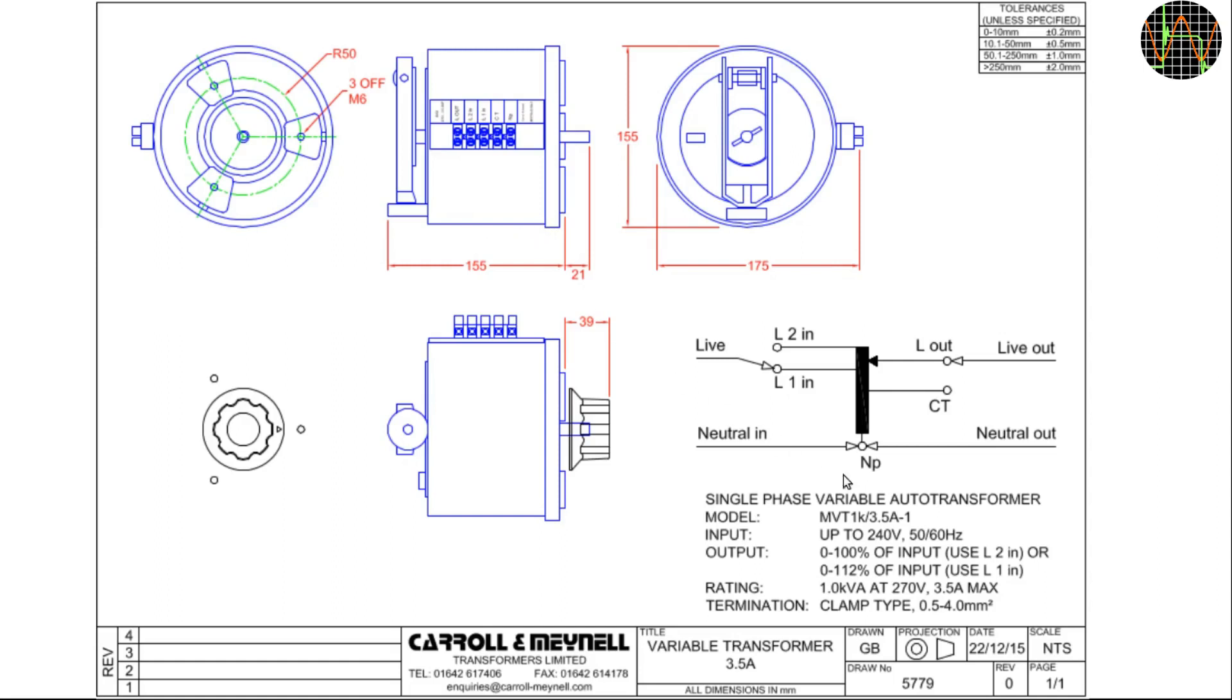The other important bit on this drawing is the wiring diagram here. This transformer has a choice of two input connections for the live wire. If you connect it to L2, which is the very end of the coil, then the output can go as high as the input voltage, which is when the slider basically touches L2. So at an input of 240V, you get 0 to 240V as an output.